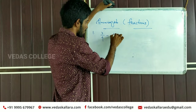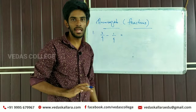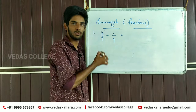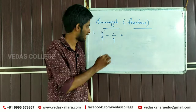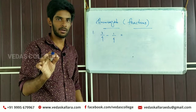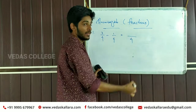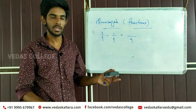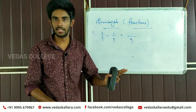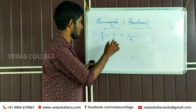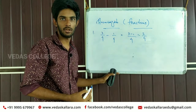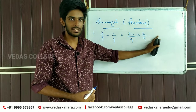The question is: 3 by 4 minus 1 by 4. For the same denominator, we apply plus and minus. You can add or subtract with the same denominator. So 3 minus 1 is 2 by 4, which simplifies to 1 by 2.